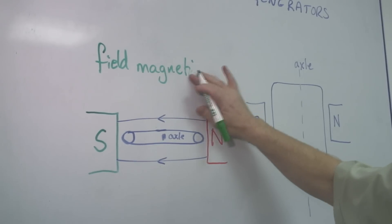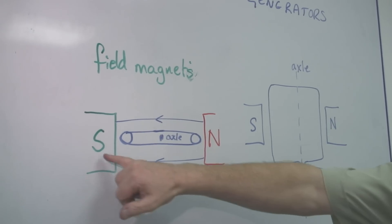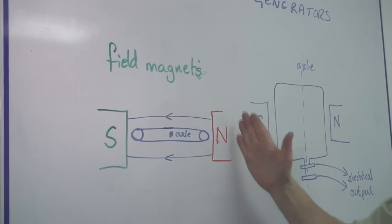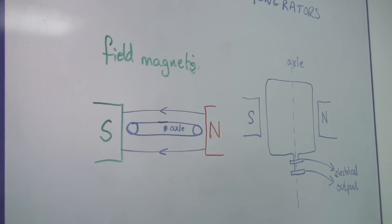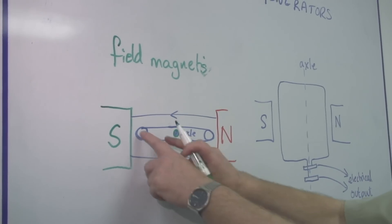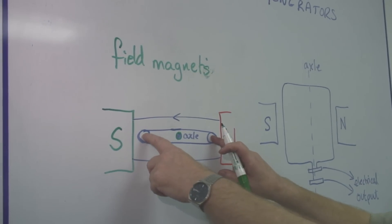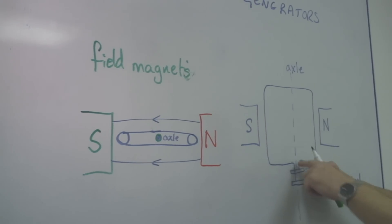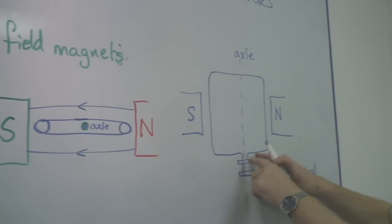So these are field magnets and here we've got a field going from north to south. Inside that field I've got a coil of wire. This is it from the top. There's the coil of wire and this goes round and round but I've just shown one.